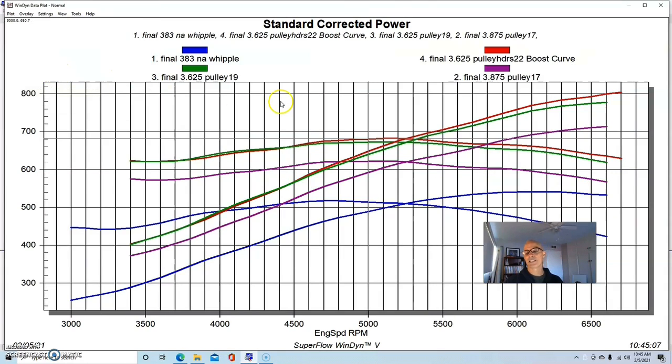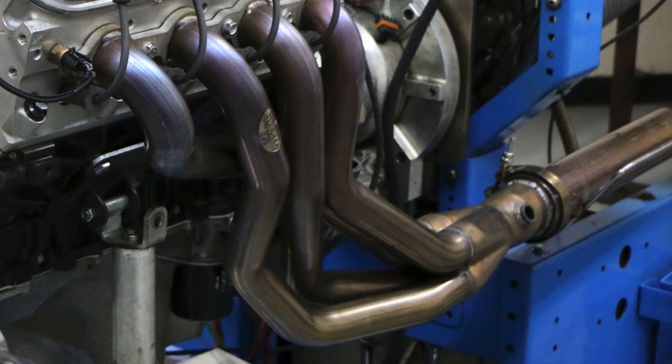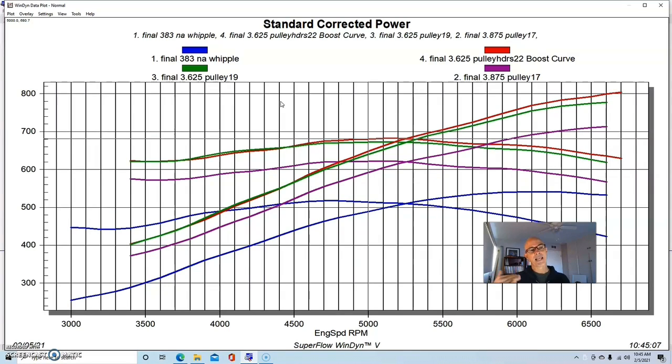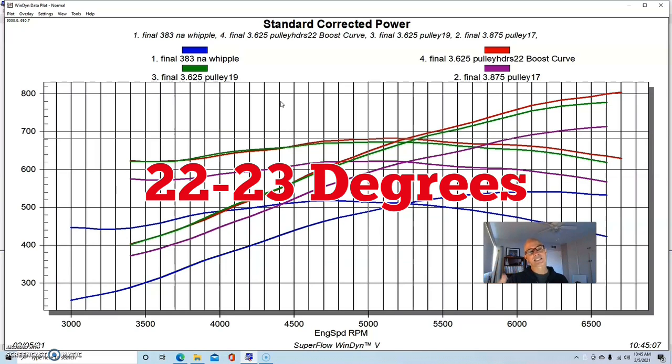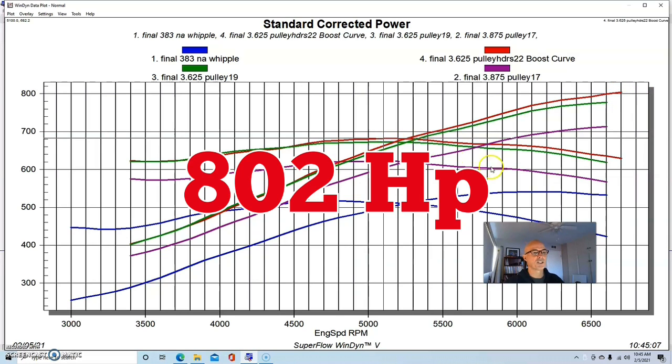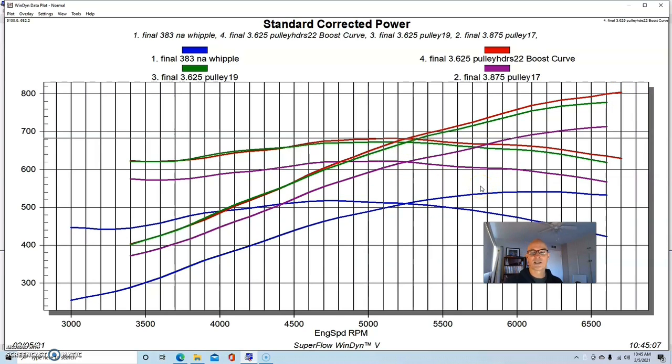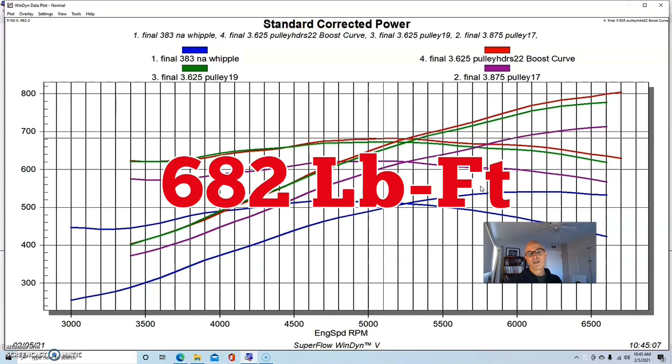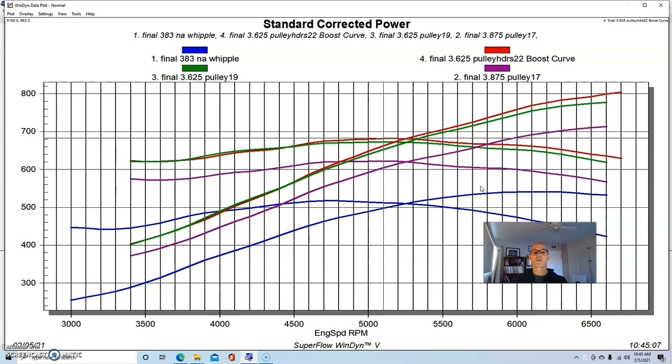Because we were getting close to 800 horsepower, I wanted to make 800 horsepower with the supercharged combination. We put on a set of 1 7/8-inch headers to add some exhaust flow and I added one degree of timing. I did those at the same time and should have done them one at a time, but all I was looking to do was top the 800 horsepower mark without having to change the blower pulley size. We made 802 horsepower with those changes and peak torque was up to 682 foot-pounds.